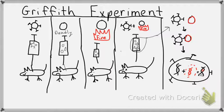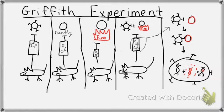That is what Griffith called a transforming factor — we now know that transforming factor to be DNA. Be able to describe why this is important, namely why it was important for him to show that the rough and heat-killed smooth both did not kill the mice individually, because that makes it novel that the rough and smooth added together do kill the mice. That's the Griffith experiment — good luck studying.